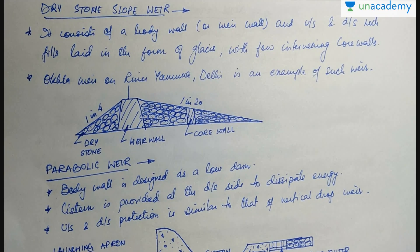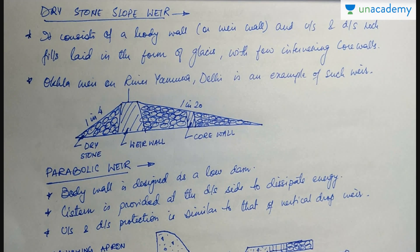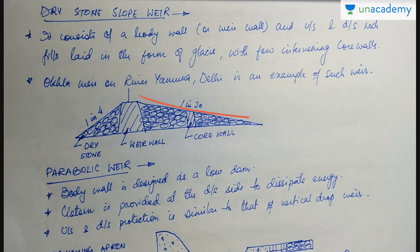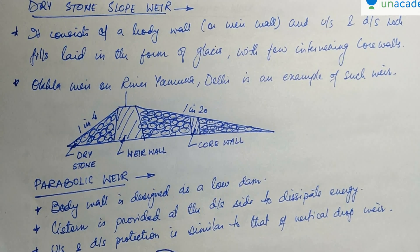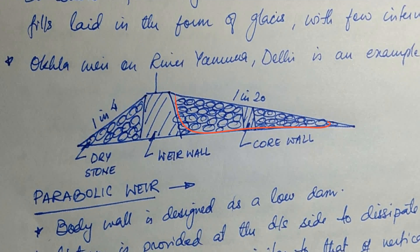The dry stone slope weir consists of a body wall or weir wall, and upstream and downstream rock fills laid in the form of glacis with few intervening core walls. Okla weir on river Yamuna, Delhi, is an example of such a weir. The slope provided on the upstream is 1 in 4, while the slope on the downstream side is 1 in 20. Both sides are of dry stones with the weir wall in the middle.